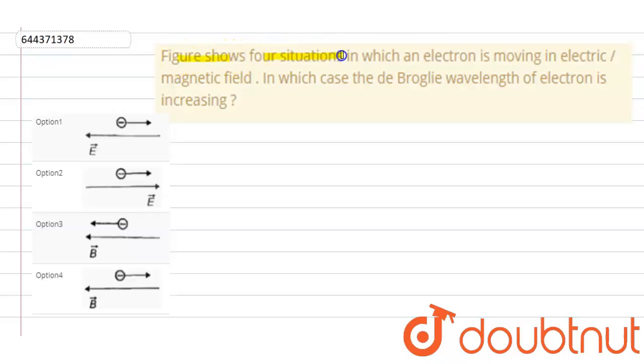Hello students, so the question is: Figure shows four situations in which an electron is moving in electric and magnetic field. In which case the de Broglie wavelength of electron is increasing?